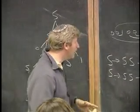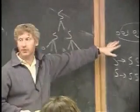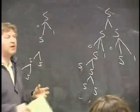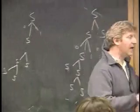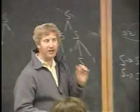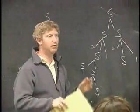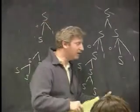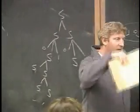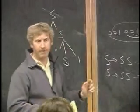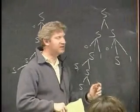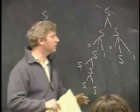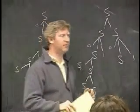We say a grammar is ambiguous if any string in the language has two or more parse trees. The grammar is unambiguous only if every single string that's in the language has a unique parse tree, or a unique leftmost derivation. That means you can uniquely figure out how to parse it and come up with a single tree that parses it. Let me stop — I just said a lot of important things, so let me make sure I can clarify any questions before we move on.